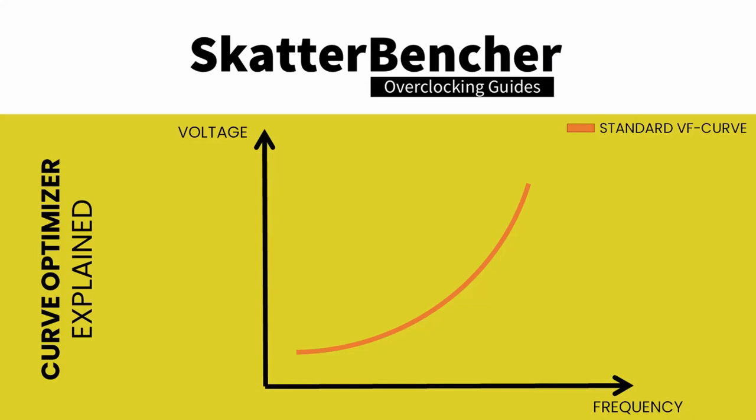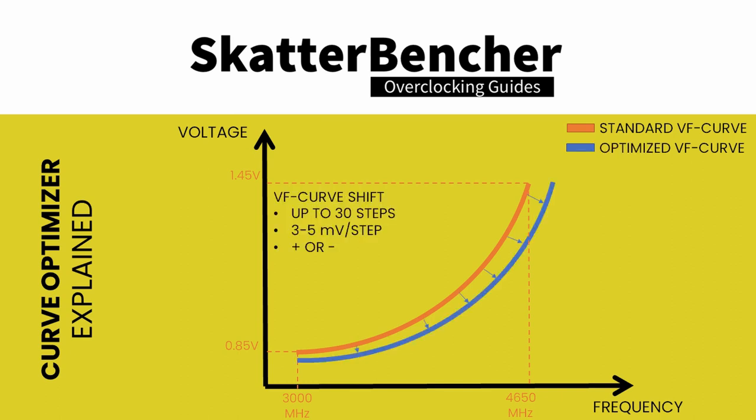Every CPU core in a Ryzen CPU has a factory-defined voltage-frequency curve that determines the relationship between operating voltage and frequency — typically, the higher the voltage, the higher the frequency, and vice versa. Curve Optimizer allows end users to adjust this curve for each CPU core individually, offsetting the entire curve by up to 30 steps in either a positive or negative direction. Each step represents between 3 and 5 mV, meaning we can increase or decrease the curve by up to 150 mV.